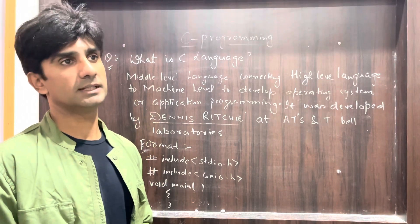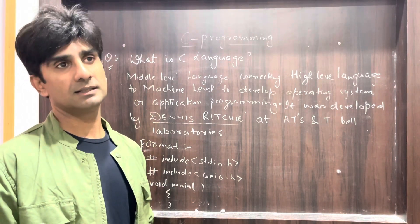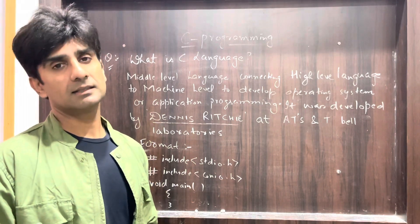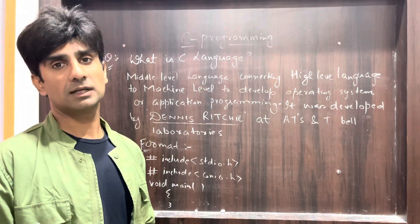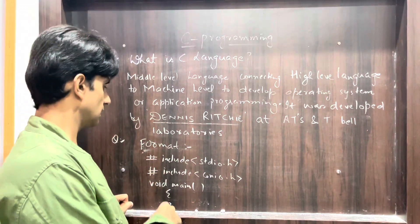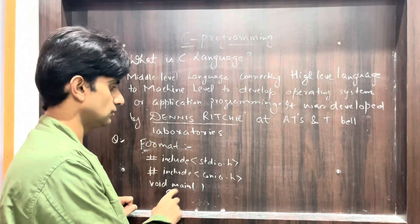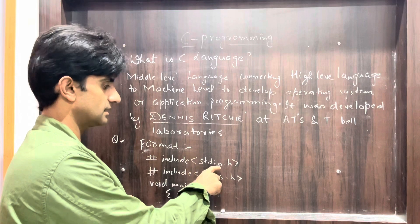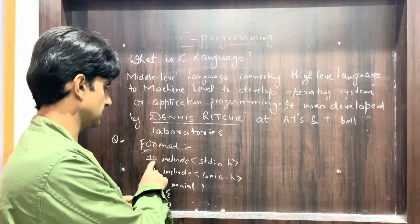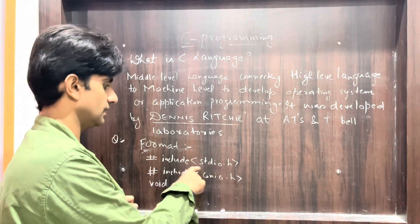In order to create a C program, you have to understand that there are certain steps you have to follow — that is the format to create a C program. First of all, you have to write hashtag include stdio.h. This is called the preprocessor directive, and this is the header file.